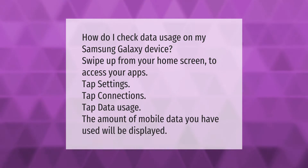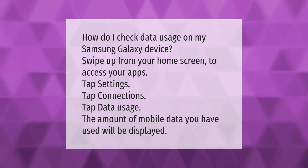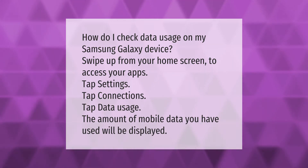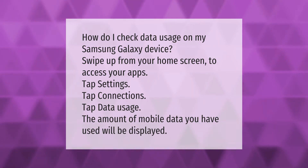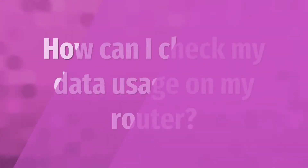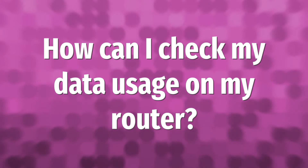How do I check data usage on my Samsung Galaxy device? Swipe up from your home screen to access your apps. Tap Settings, tap Connections, tap Data Usage. The amount of mobile data you have used will be displayed.